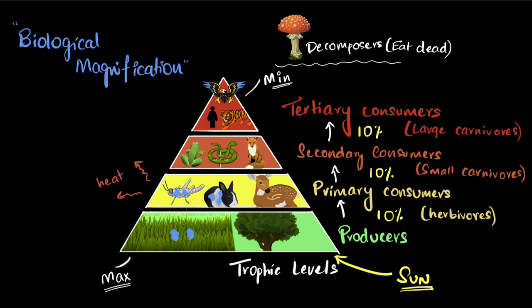As secondary consumers eat multiple primary consumers, they accumulate even more pesticides. And when apex predators eat secondary consumers, they end up with the highest concentration of pesticides. The concentration of these harmful substances becomes magnified — this is what we call biological magnification. The amount of harmful substances in our body keeps increasing up the trophic levels, which is another reason we don't have many trophic levels and why there are far fewer individuals at the top.